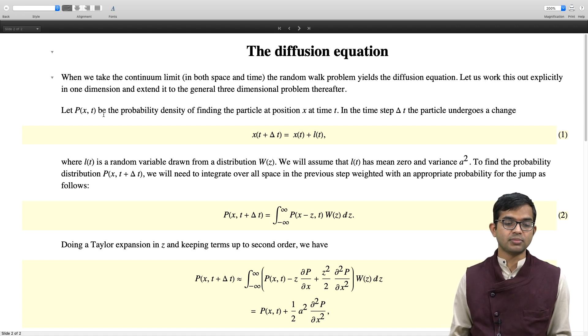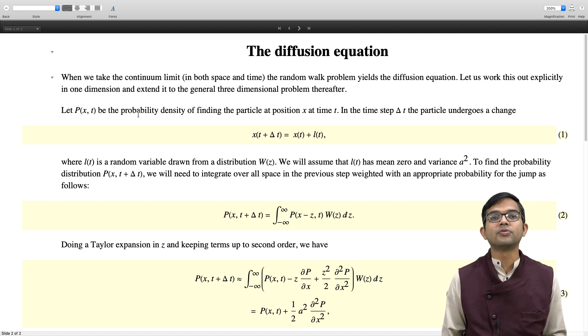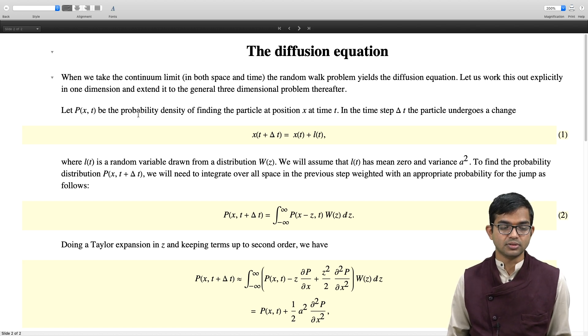So let P(x,t) be the probability density of finding the particle at position x at time t. Now it is a probability density, so you have to integrate in some region in time to get a probability. In the time step delta t, the particle undergoes a change. If it were located at x(t), it is going to be at x(t) + L(t) after this small interval of time delta t has elapsed. And the key point is that this L(t) is a stochastic random variable. It is drawn from some distribution W(ℓ).